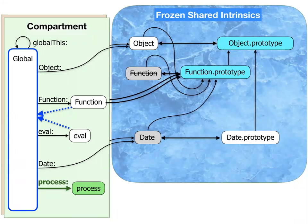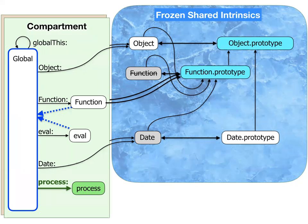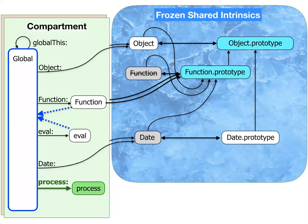When one compartment creates another, it can also provide the new compartment with virtual host objects. For example, on a browser where the start compartment has the document object, it can create another compartment that has a process object in order to arrange an emulation of the Node environment — so you can emulate the Node host while on a browser host or vice versa. The process object in this case is just an object written in JavaScript, created by the controlling compartment.